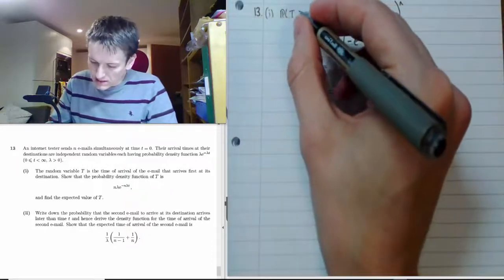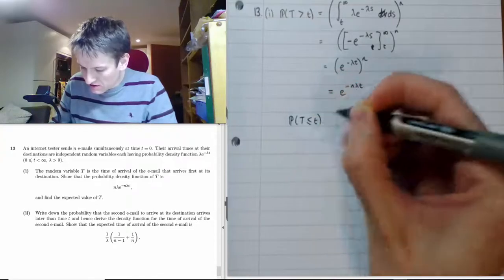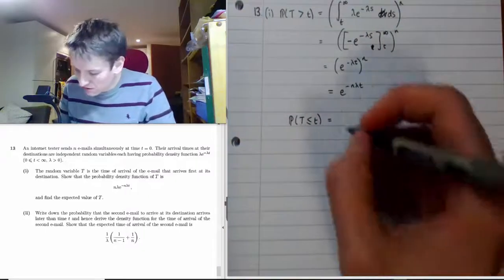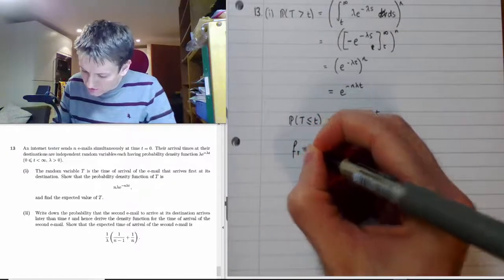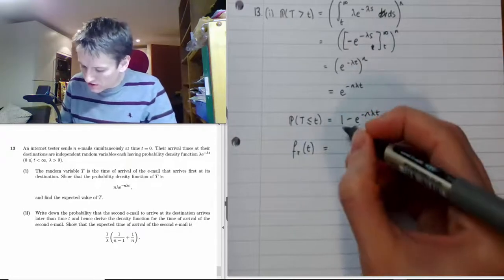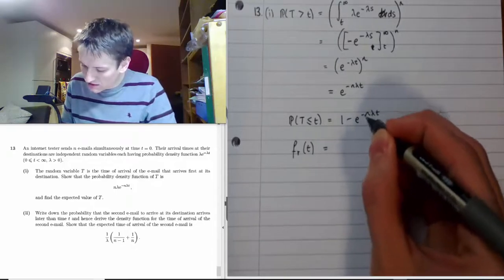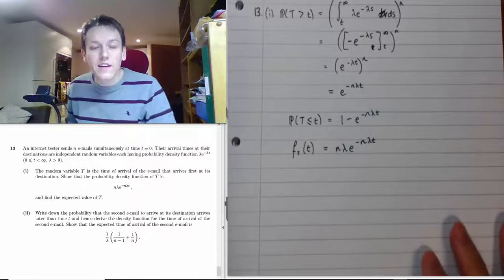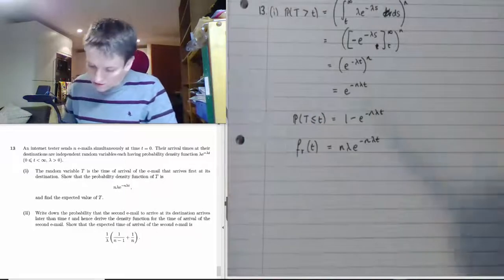The probability that T is less than or equal to t — the CDF — is therefore 1 minus e^(−nλt). Since T is continuous, we get the PDF by differentiating: the 1 differentiates to 0, and differentiating the exponential brings down the constant −nλ, giving the PDF as nλe^(−nλt), which is exactly what we were required to show.